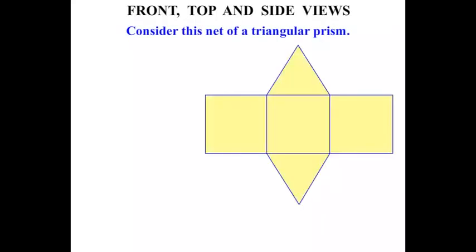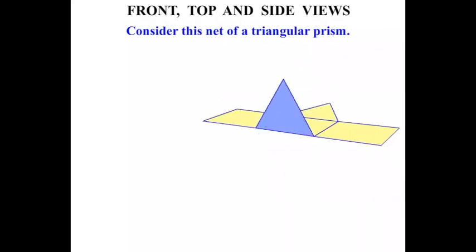In this lesson we do some work on front, top and side views of some common solids. Consider this net of a triangular prism. The net is there. We fold it up to make the triangular prism.